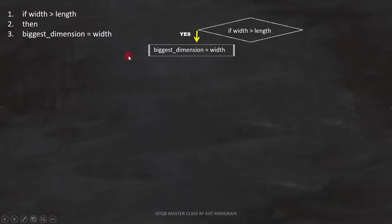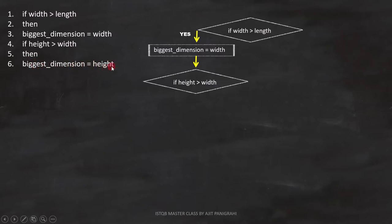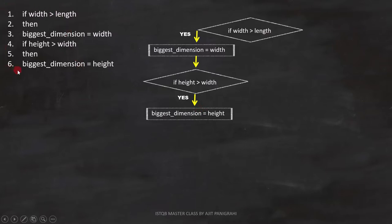Now let's analyze line 4: if height is greater than width. We have to continue with the same branch, and since it is a condition, we have represented it like this. Now let's analyze the fifth and sixth lines: then biggest dimension equals to height. That means if this condition is correct, biggest dimension equals to height. Until now, we have analyzed the first six lines of the code.